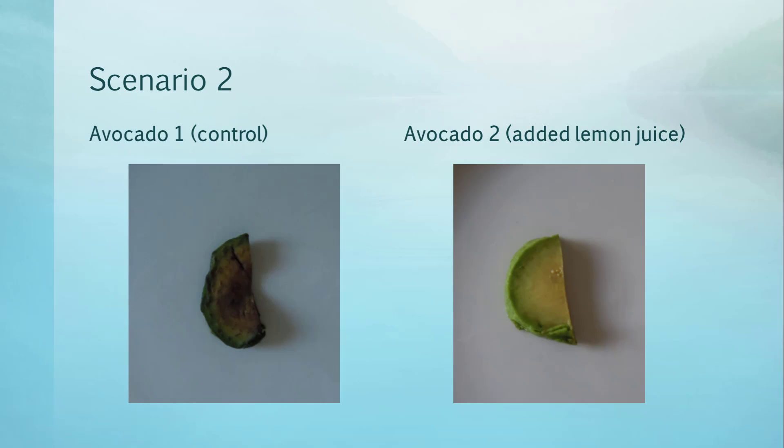Avocado 1 is the control and avocado 2 has had the independent variable applied to it which is the lemon juice.